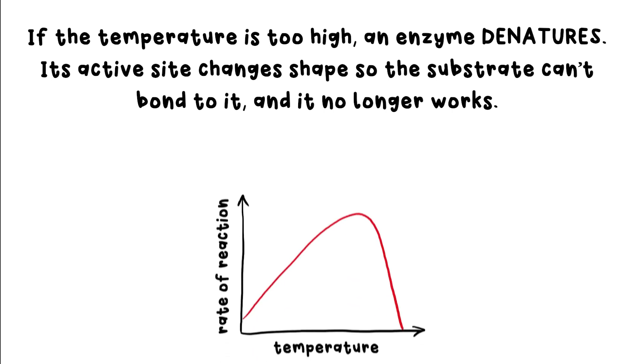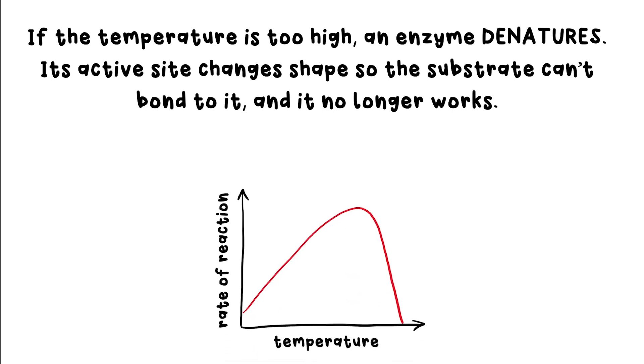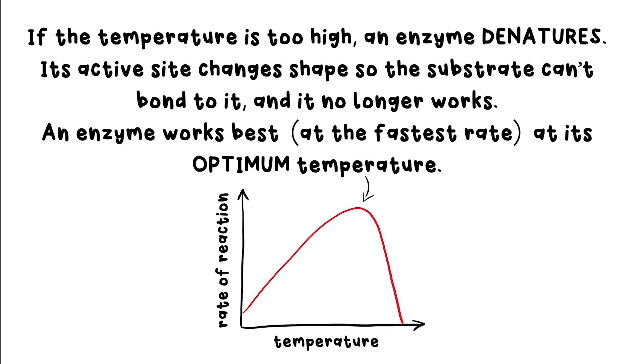But there's a sweet spot where an enzyme works the best: not too hot, not too cold. We call this the optimum temperature. For most enzymes in our bodies, the optimum temperature is 37 degrees Celsius, which is why our bodies work so hard at keeping our internal temperature at around that.